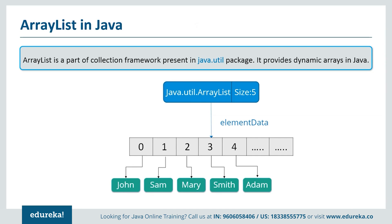Some key points to note: ArrayList is initialized by a size; however, the size can increase if the collection grows, or shrink if objects are removed from the collection. ArrayList also allows us to randomly access the list. ArrayList cannot be used for primitive types like int, char, etc. — to access those, we need a wrapper class for such cases.